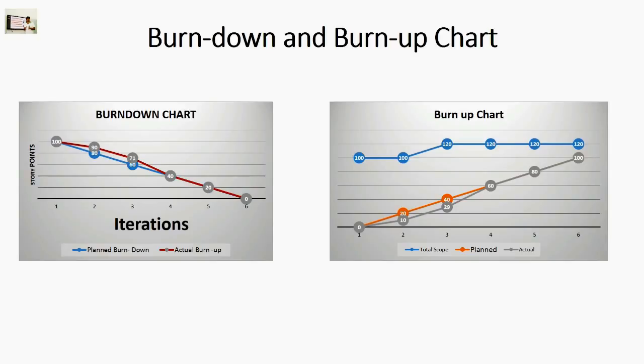One major drawback of the burn down chart is that it doesn't show clearly the effect of scope change on a project. If a customer adds work during the project, the scope change would appear as negative progress by the development team on a burn down chart. In comparison to this, scope changes are immediately evident on burn up charts. When new work is added, the total work line which is usually flat and steady will clearly show the increase in the scope and total work as shown in the picture.